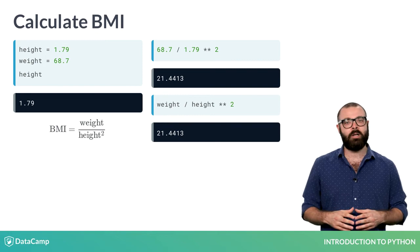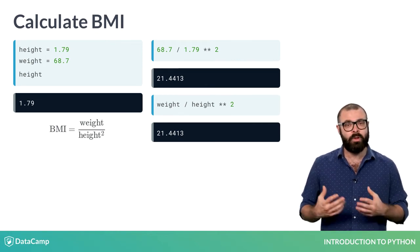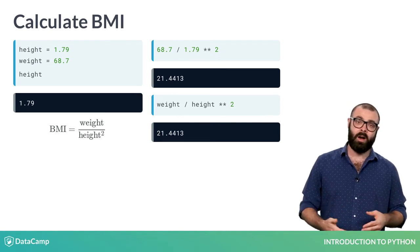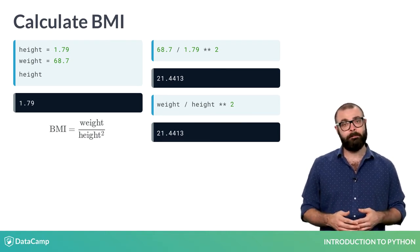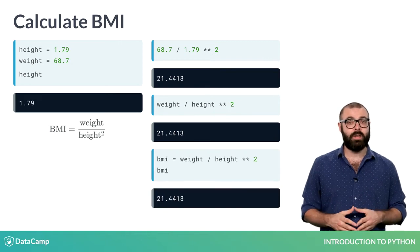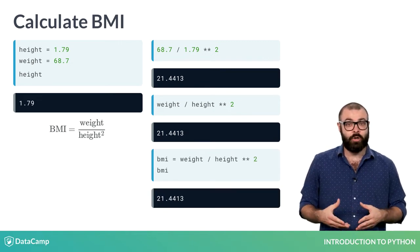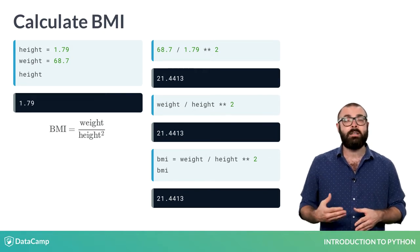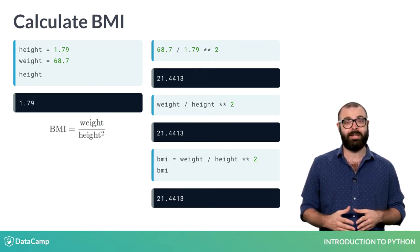Every time you type the variable's name, you're asking Python to reference the actual value of the variable. Weight corresponds to 68.7 and height to 1.79. Finally, this version has Python store the result in a new variable BMI. BMI now contains the same value as the one you calculated earlier.